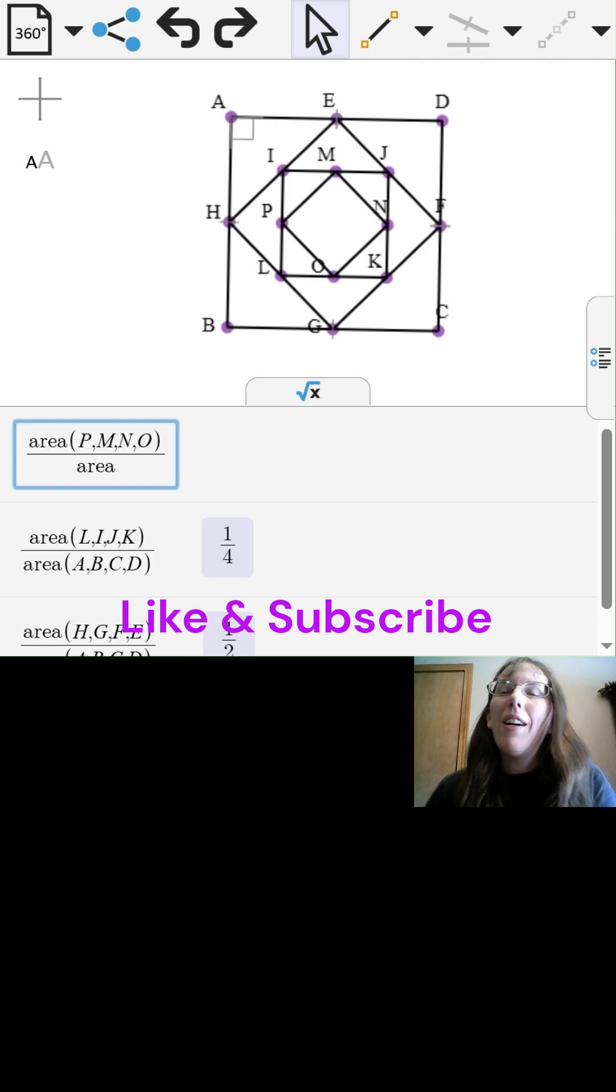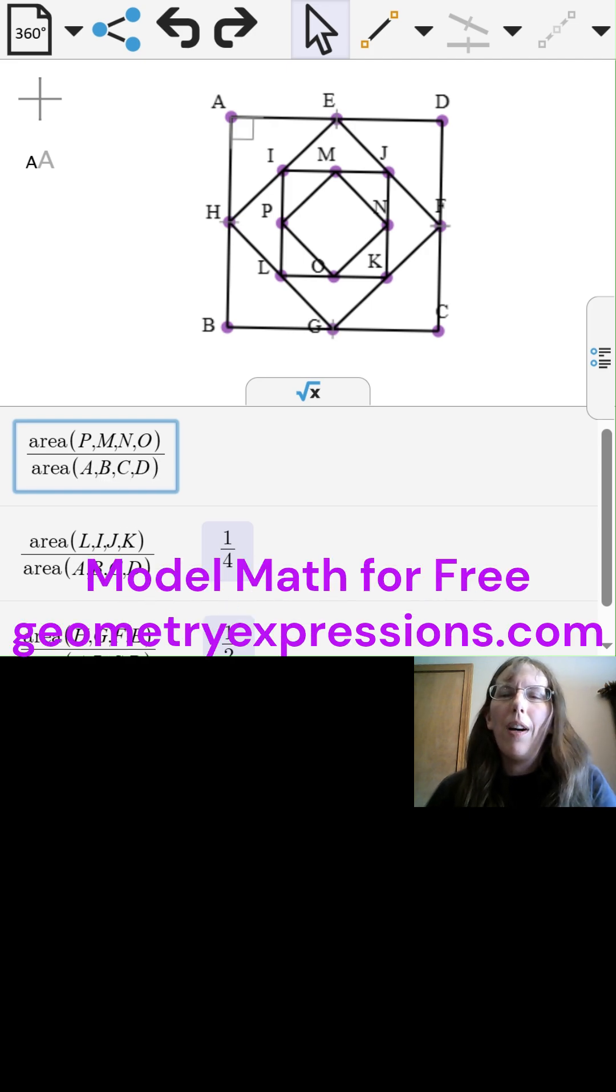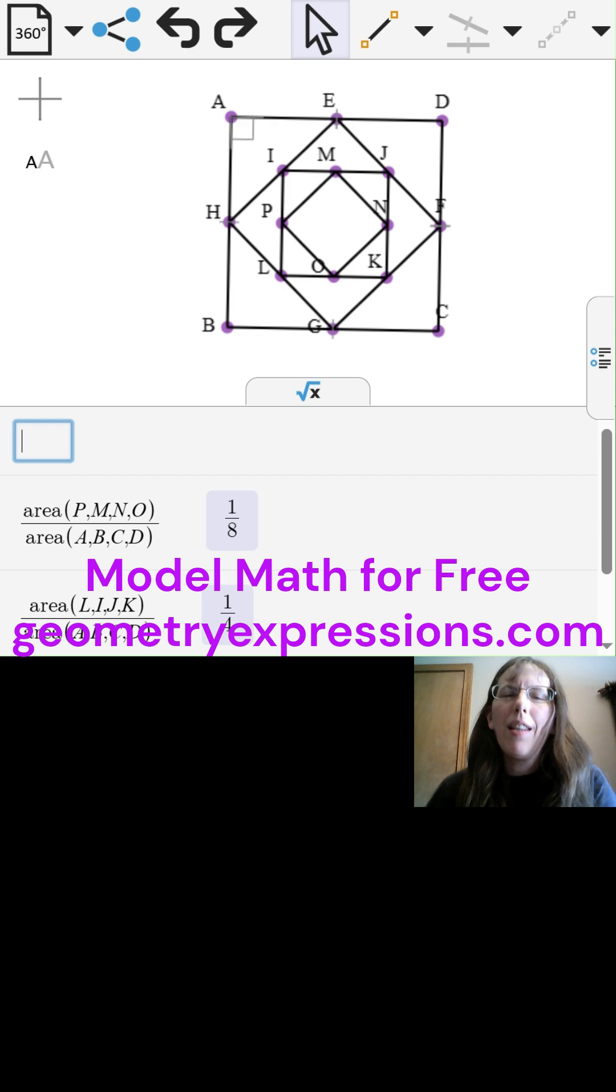Now let's find the area of the last square to the first square. Interesting. That one's an eighth. A half of a fourth is an eighth.